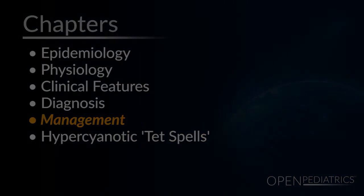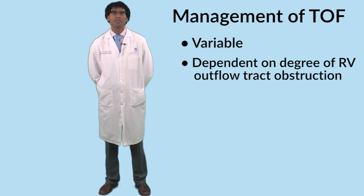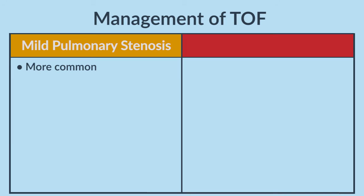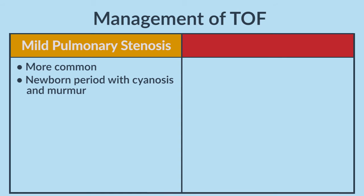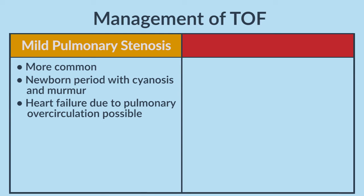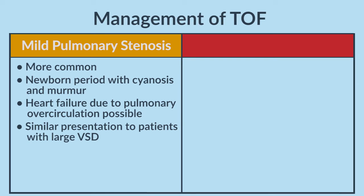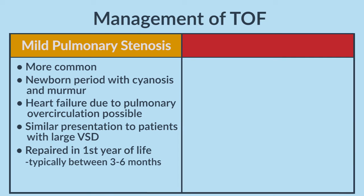Management. The management of tetralogy is variable and dependent upon the degree of right ventricular outflow tract obstruction. Milder degrees of tetralogy — which are far more common — present in the newborn period with cyanosis and the murmur we discussed, as well as the chest X-ray findings already described. Milder degrees can be associated with heart failure due to pulmonary over-circulation and behave much more like patients with a very large VSD. Those patients are typically monitored for the first year of life and repaired at some point within that year, typically between three and six months of age, to limit exposure to the effects of chronic cyanosis.